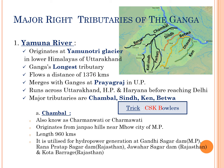Chambal river is also known as Charmanwati or Charmavati. It originates from Janpau Hills of the Vindhya Range near Mhow city in Indore district of Madhya Pradesh state. The total length of Chambal river is 960 kilometers. It is utilized for hydropower generation at Gandhi Sagar Dam in Madhya Pradesh, Rana Pratap Sagar Dam, Jawahar Sagar Dam, and Kota Barrage in Rajasthan state.